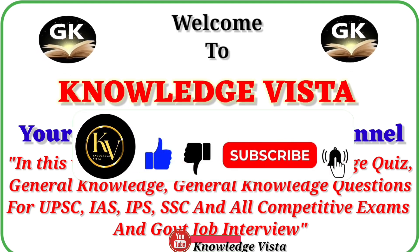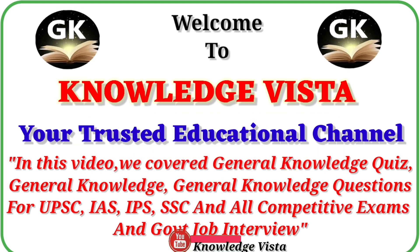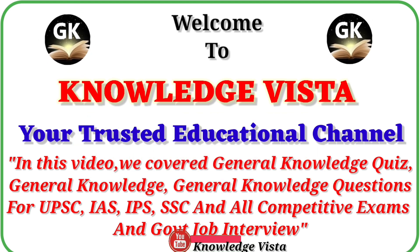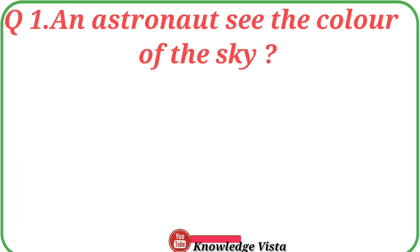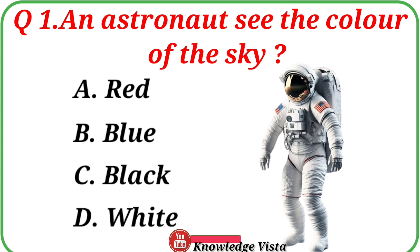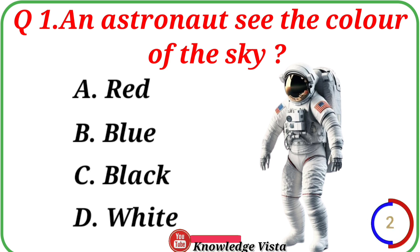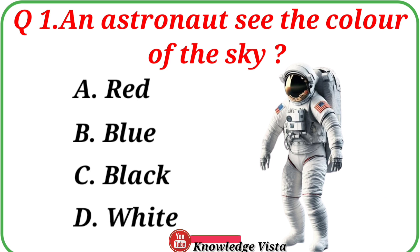Now let's start this video. Question number one: What color does an astronaut see in the sky? Option A: Red, B: Blue, C: Black, D: White. Correct answer is option C: Black.